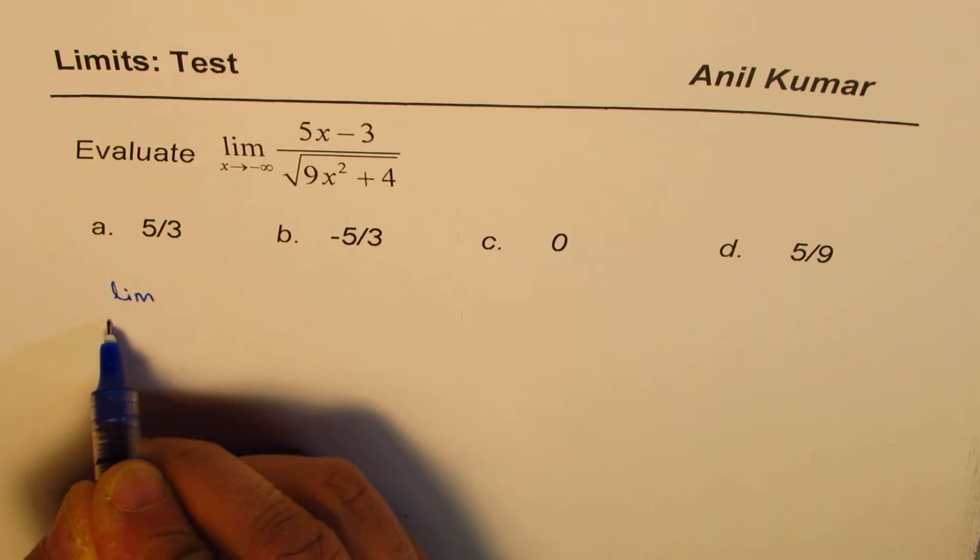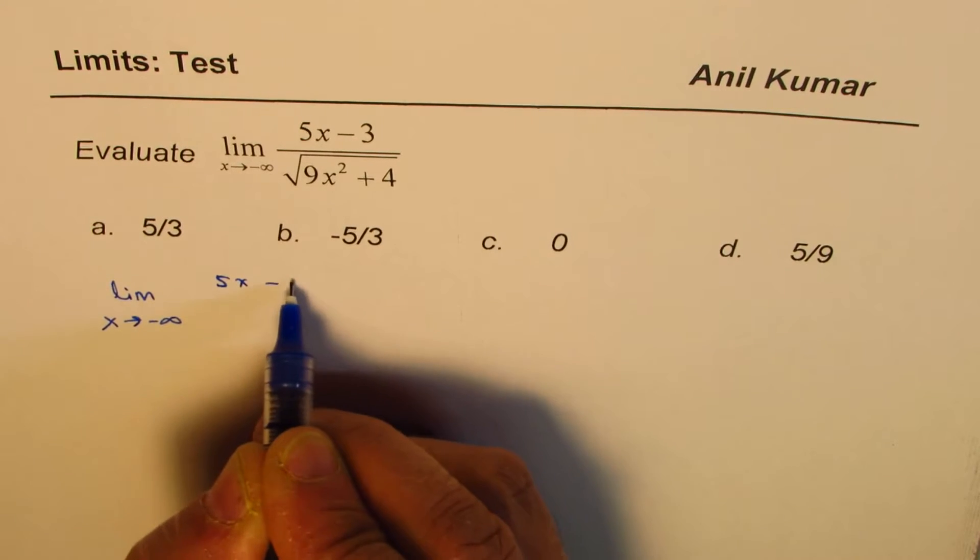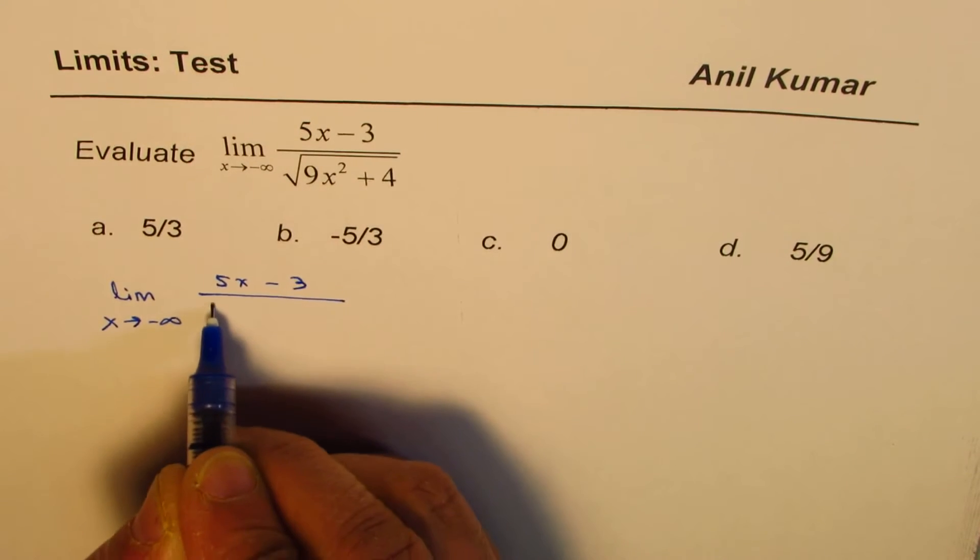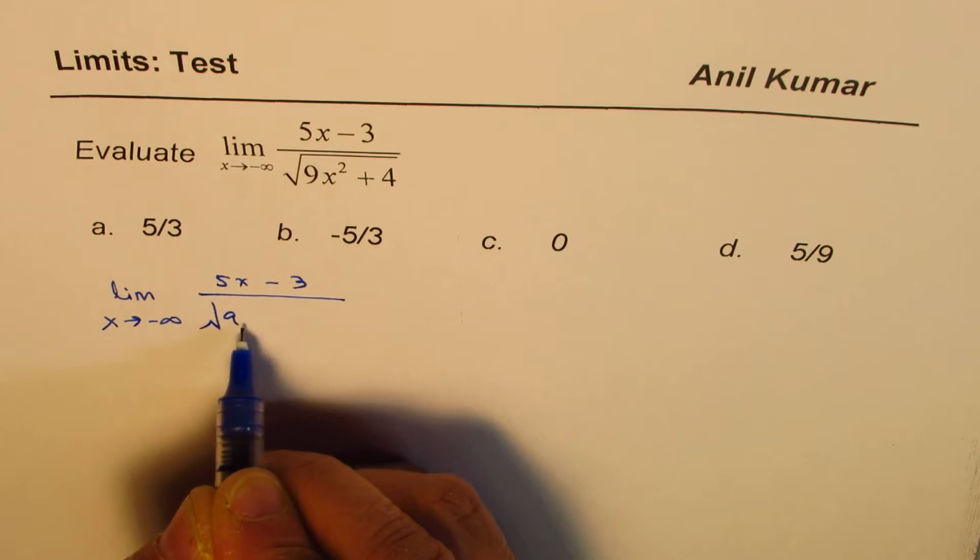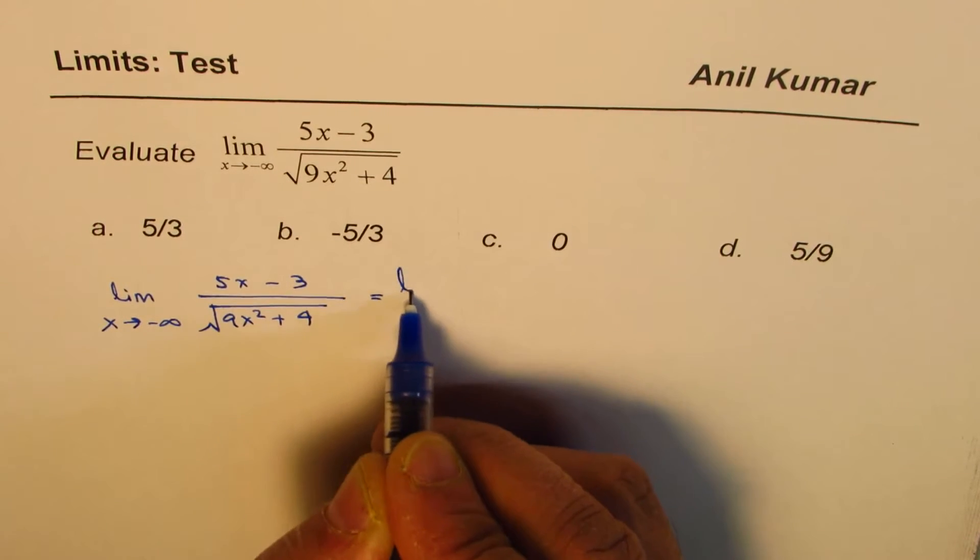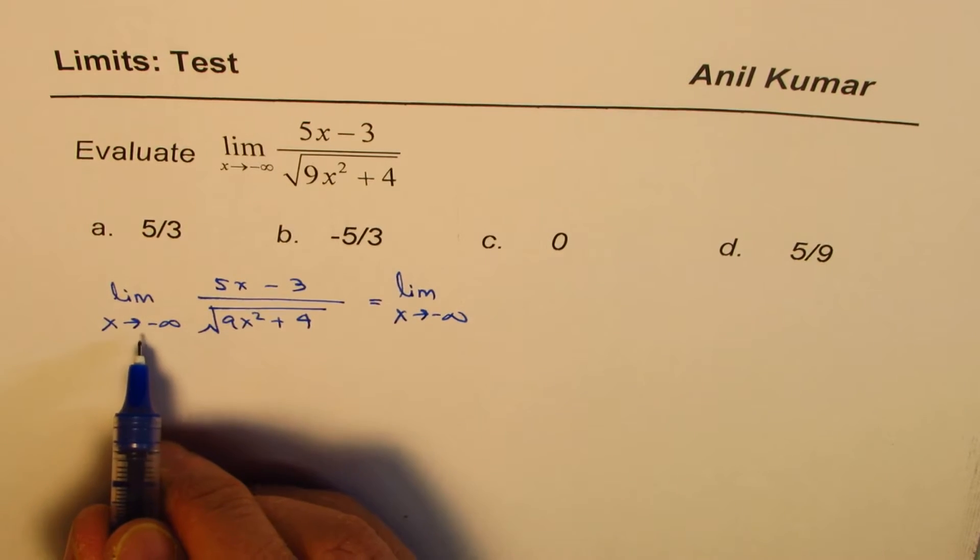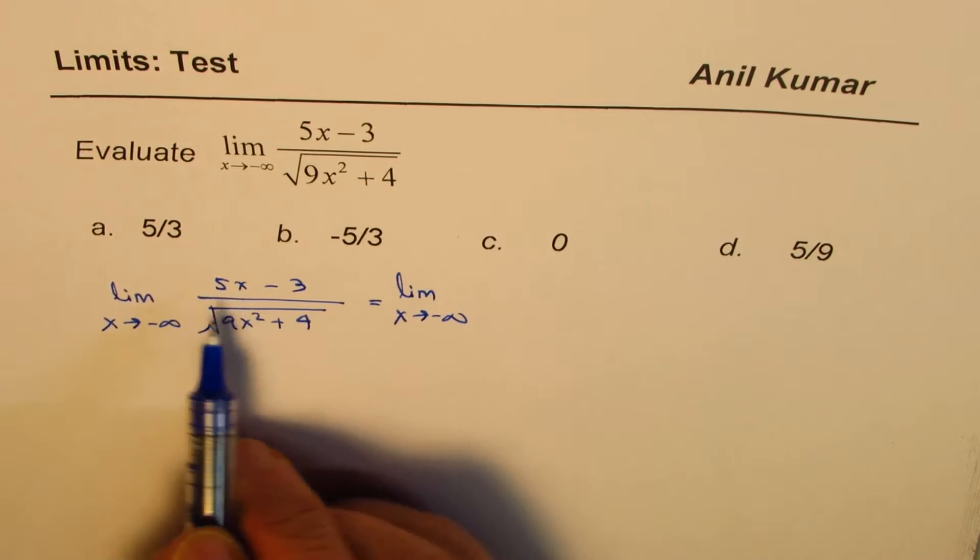We have limit x approaches minus infinity. We have 5x minus 3 divided by square root of 9x square plus 4. To solve such questions, what should we do? Whenever the limits are going to positive or negative infinity, the idea is factor out x part.